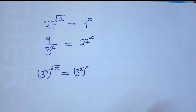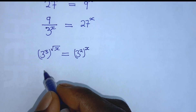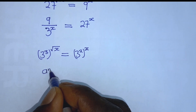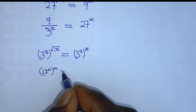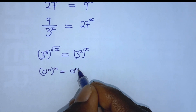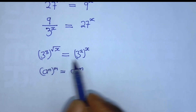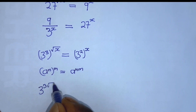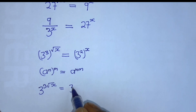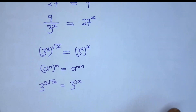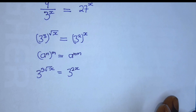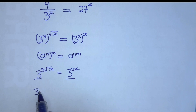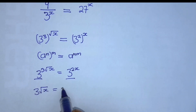Now, according to the properties of exponential functions, if we have the same base on both sides, we can equate the exponents. Applying this, 3 to the power of 3 times square root of x is equal to 3 to the power of 2x. Since the bases are the same, we equate the exponents: 3 times square root of x equals 2x.